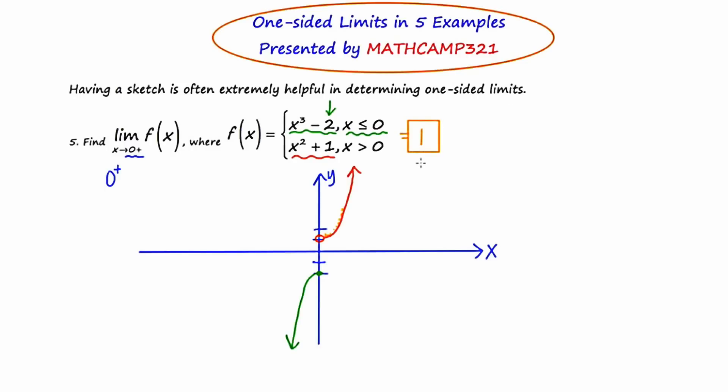This video series has been on finding one-sided limits. If you see a value with a little plus after it, it means approach from the right. And if you see a value with a minus after it, it means approach from the left. Overall, the strategy has been for examples of this type to just draw a quick sketch. If you have that visual in front of you, it's going to be much easier for you to answer the question.